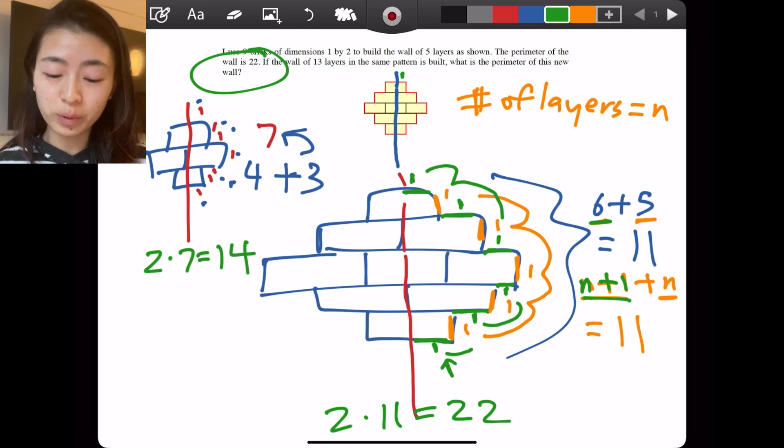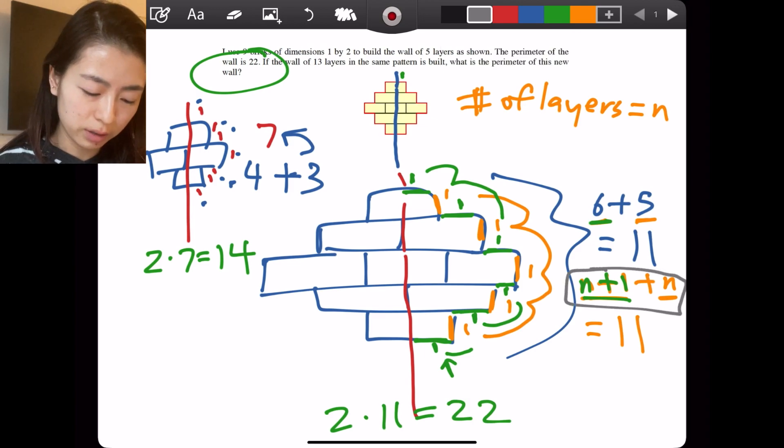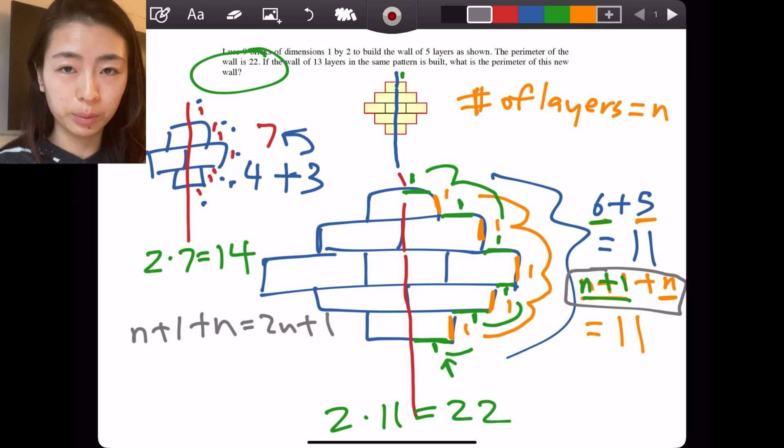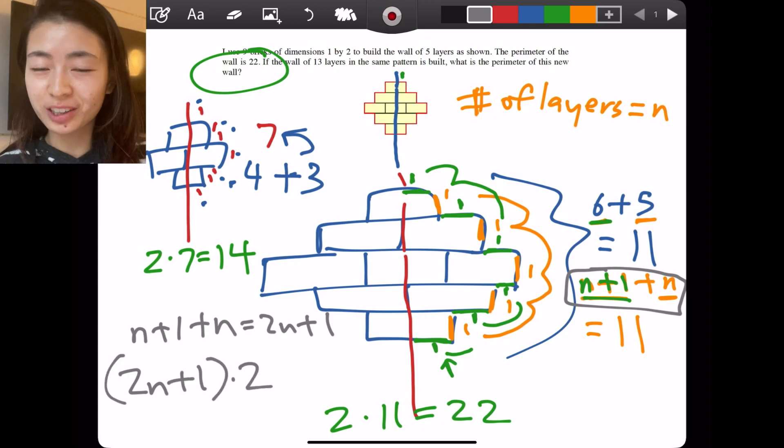Now we actually have a formula to represent the perimeter, no matter how many layers it is. I have that one side is n plus one plus n, which is two n plus one. But remember, this is only half of the perimeter. So I multiply that whole thing by two. And that is my formula for the perimeter.